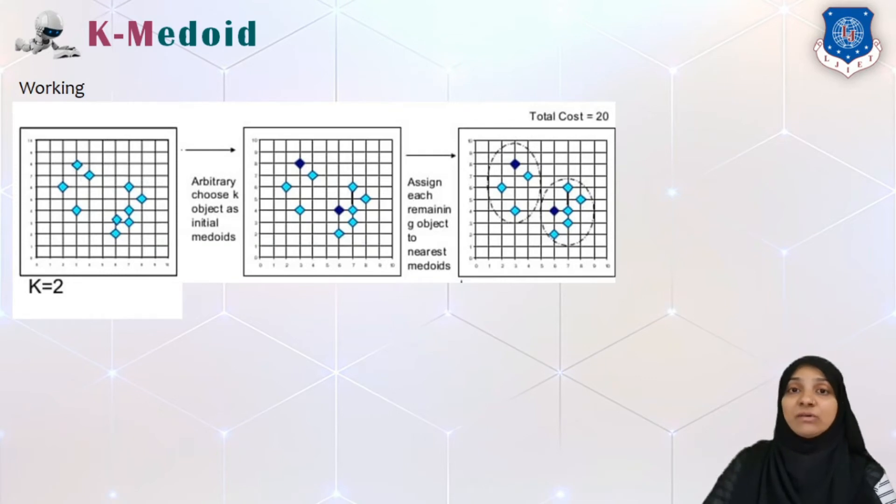Now we will calculate something called as a distance or a cost of a medoid. That can be calculated as sum of the length from medoid. So for this point, one, two and three will be the length, plus one, two, three, four. So three plus four will be seven, and for this one and two will be two. So seven plus two, total nine is the cost of this cluster.